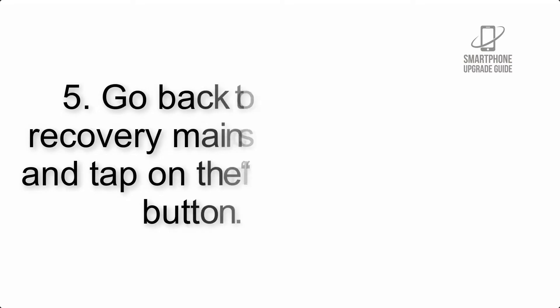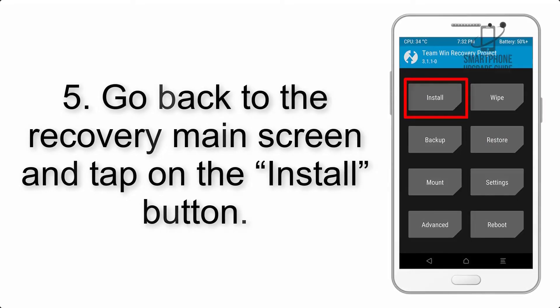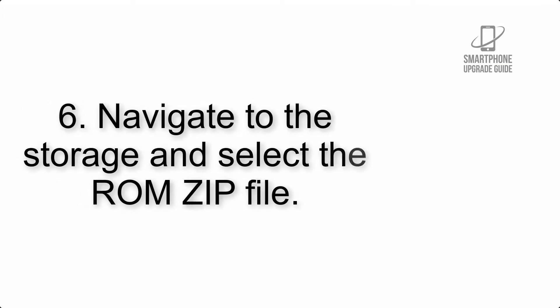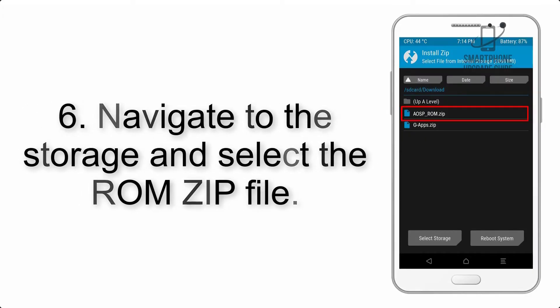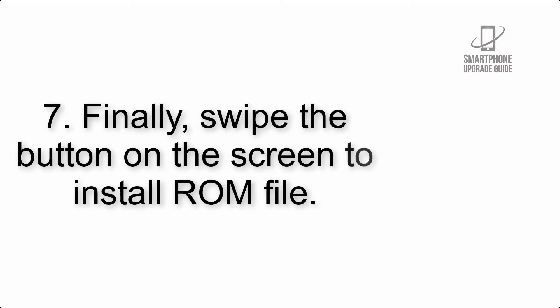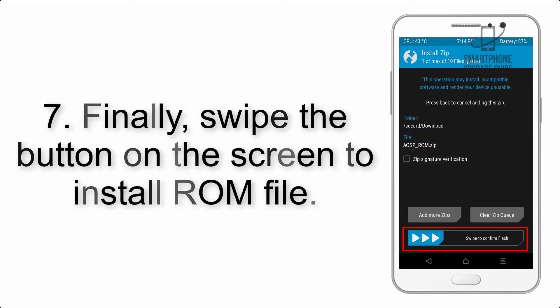Step 5: Go back to the recovery main screen and tap on the Install button. Step 6: Navigate to the storage and select the ROM zip file. Step 7: Finally, swipe the button on the screen to install the ROM file.